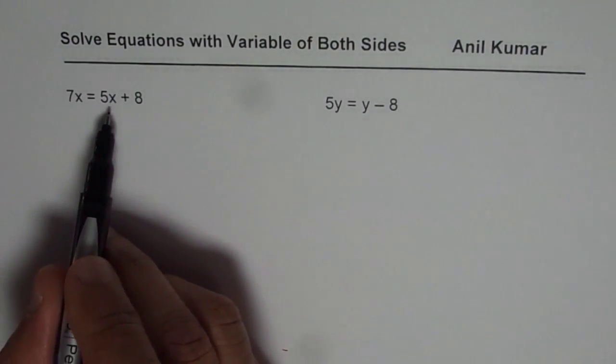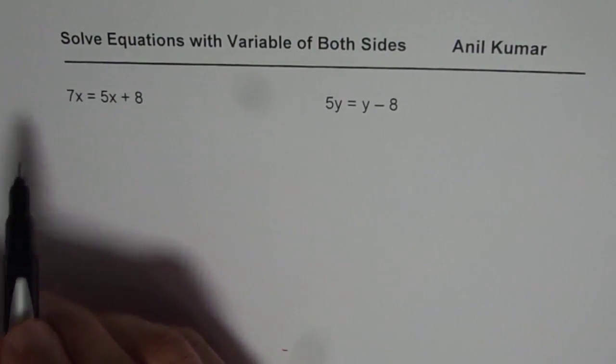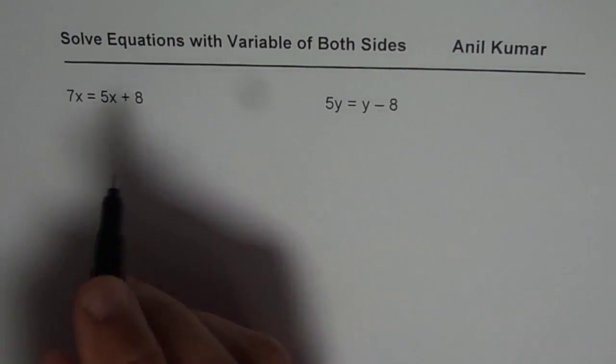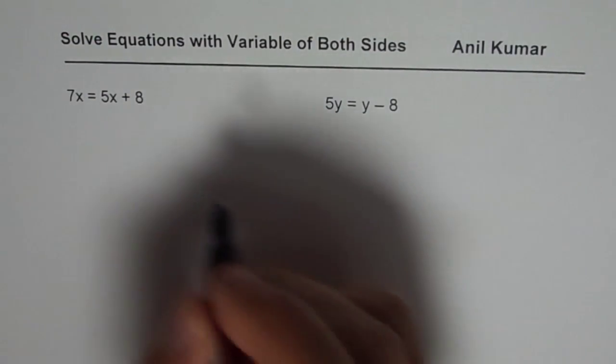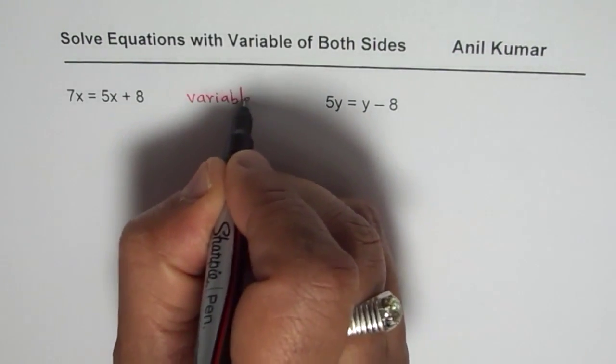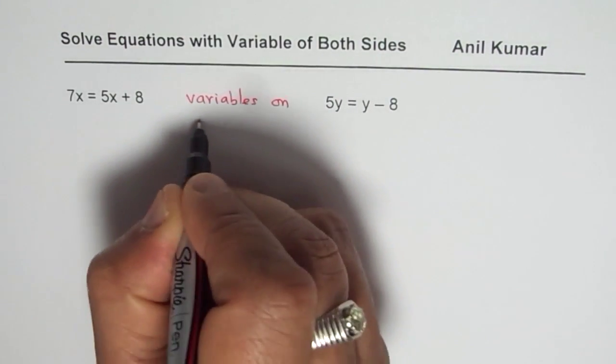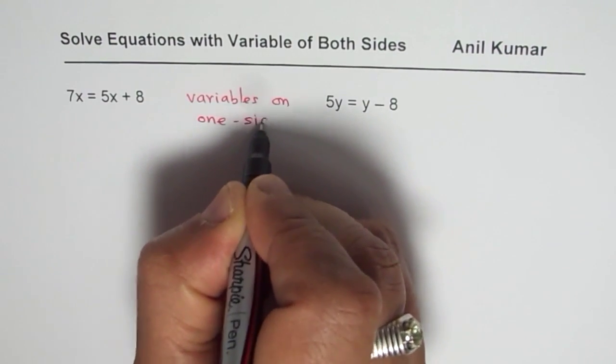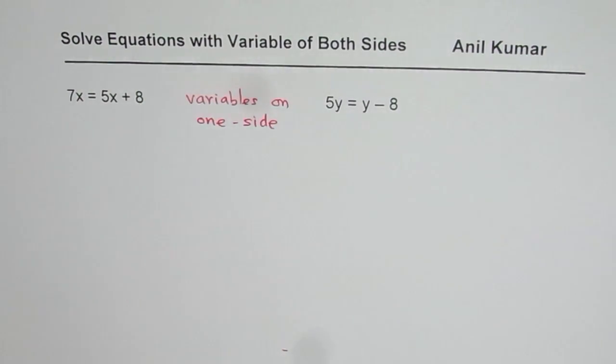The idea is to get variables on one side. So that is the whole concept. In this case our key thing is get variables on one side. Any side which you prefer, but they should be on one side.